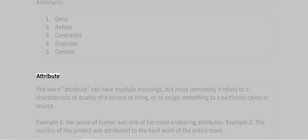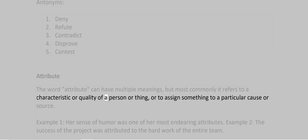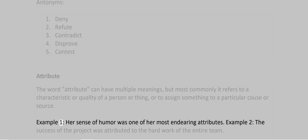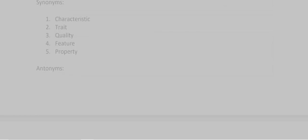Attribute. The word attribute can have multiple meanings, but most commonly it refers to a characteristic or quality of a person or thing, or to assign something to a particular cause or source. Example 1: Her sense of humor was one of her most endearing attributes. Example 2: The success of the project was attributed to the hard work of the entire team. Synonyms: 1. Characteristic 2. Trait 3. Quality 4. Feature 5. Property.